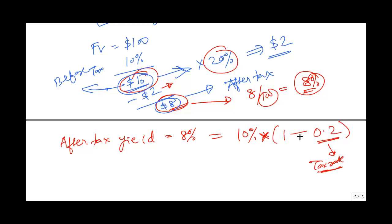So 1 minus tax rate times 10%. Your after-tax yield equals the before-tax yield times (1 minus your marginal tax rate). Unless otherwise given, it is assumed to be the marginal tax rate. This is your after-tax yield formula.